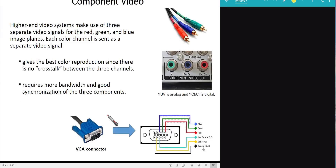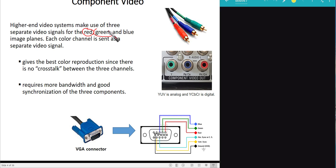Component video is used by higher-end video systems. Just as a color image has red, green, and blue planes, in component video systems we produce a red video signal from the red plane, a green signal from the green plane, and a blue signal from the blue plane — giving us three separate video signals, one for each fundamental color.